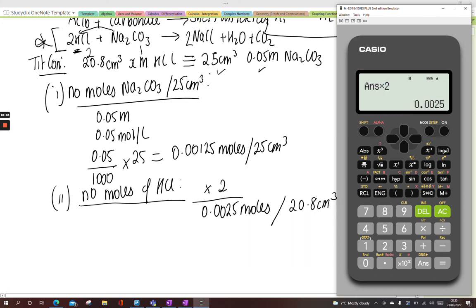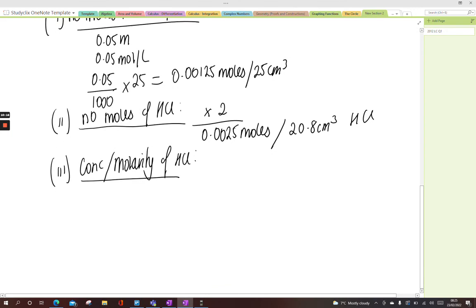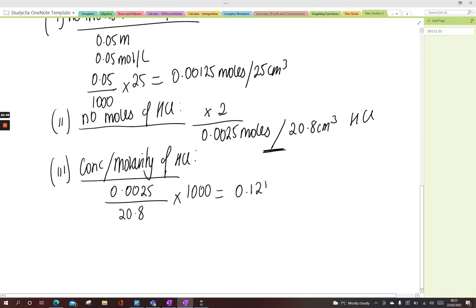The last thing they'll ask you for is the concentration or molarity. Molarity means the number of moles of HCl per liter. At the minute, I've got the number of moles in 20.8 cm³. So 0.0025 in 20.8—for the number of moles in a liter, times that by a thousand. So it's that answer divided by 20.8, multiply by a thousand, and I get 0.12 moles per liter or 0.12 M.